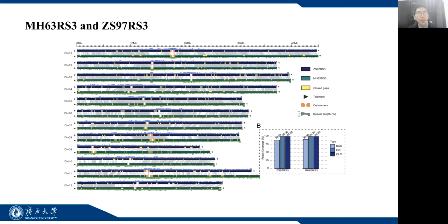We named them Zhenshan RS3 and Minghui RS3, which contain 12 gap-free chromosomes, one contig per chromosome, with a total length of 381 and 385 Mbps, respectively.